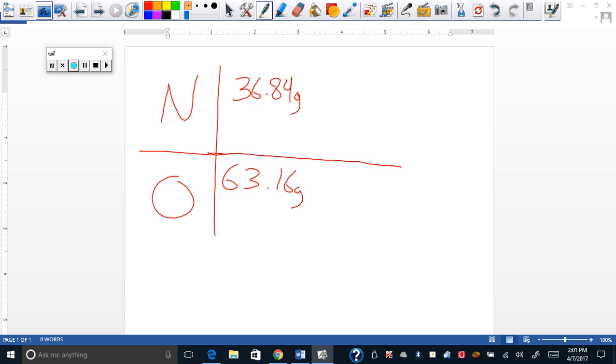Exactly right, we're gonna divide by the mass in the periodic table and we're gonna put one more on top. All right, so what is the mass of nitrogen in the periodic table? 14 grams. All right.